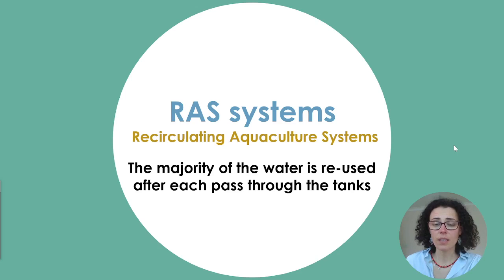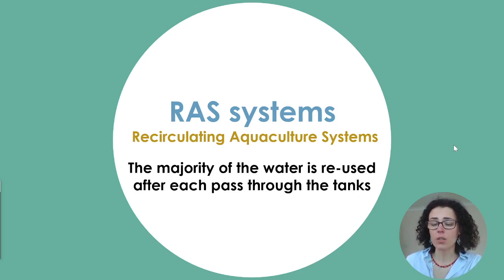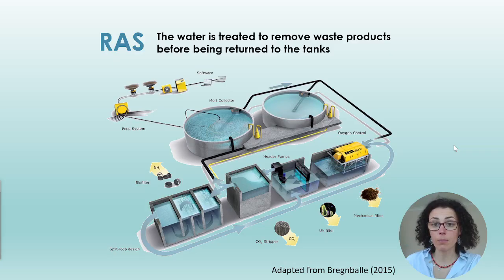So let's start by defining what a RAS is. Basically and very simply, it's a system where the water is reused. So after each pass through the tanks, the water will go again back to the system and back to the tanks.